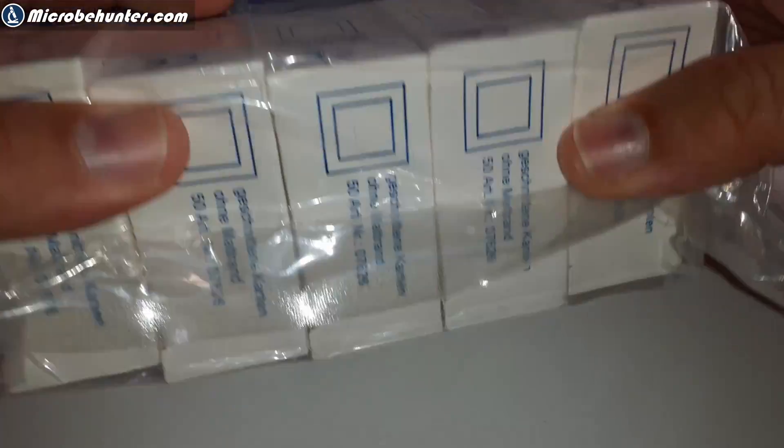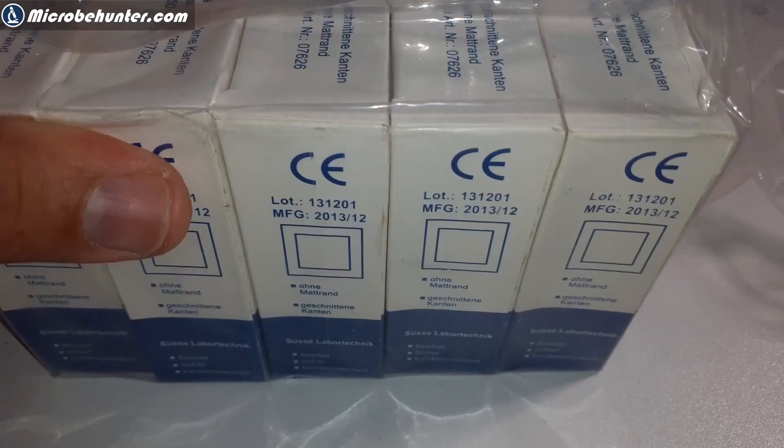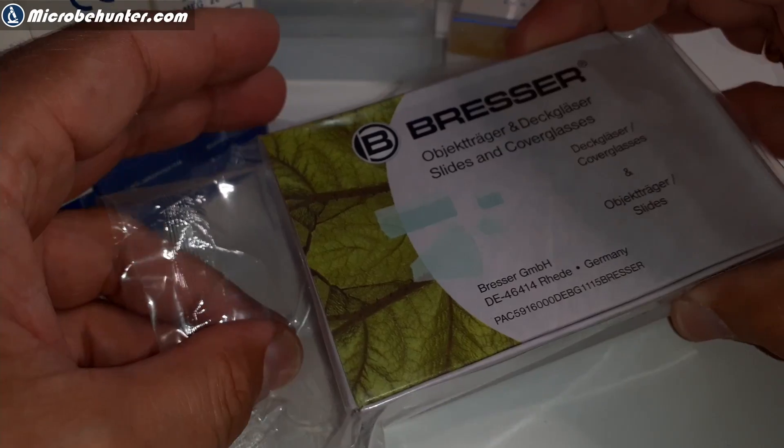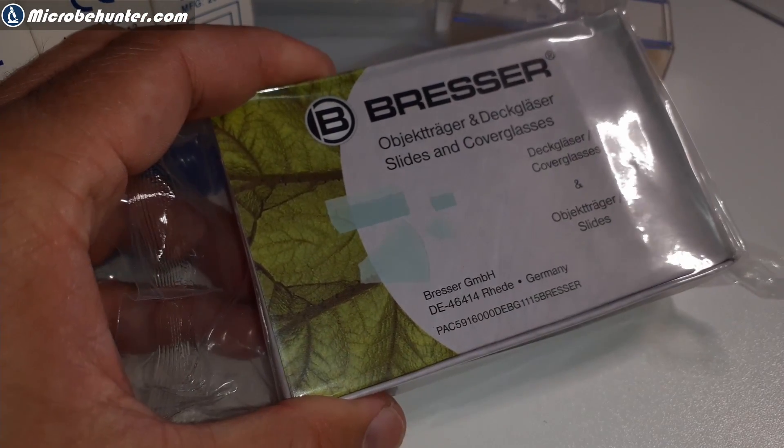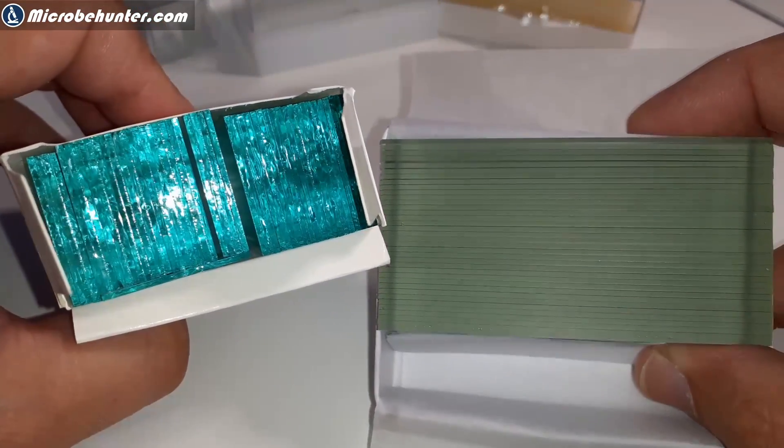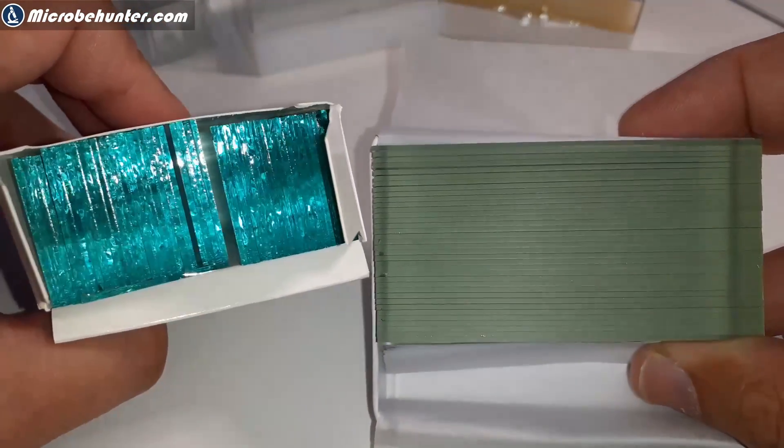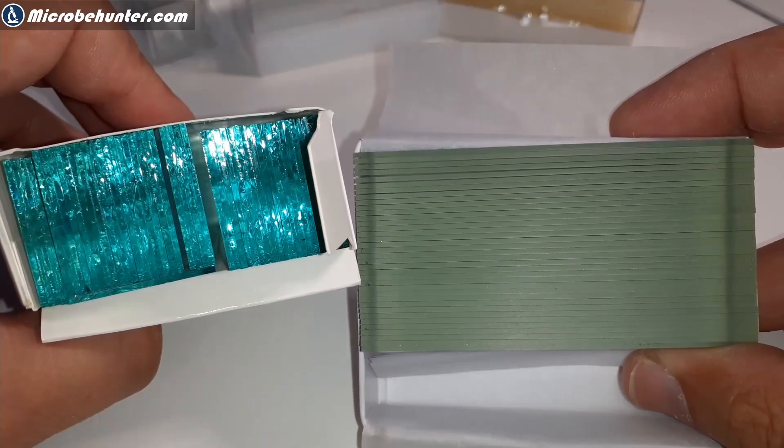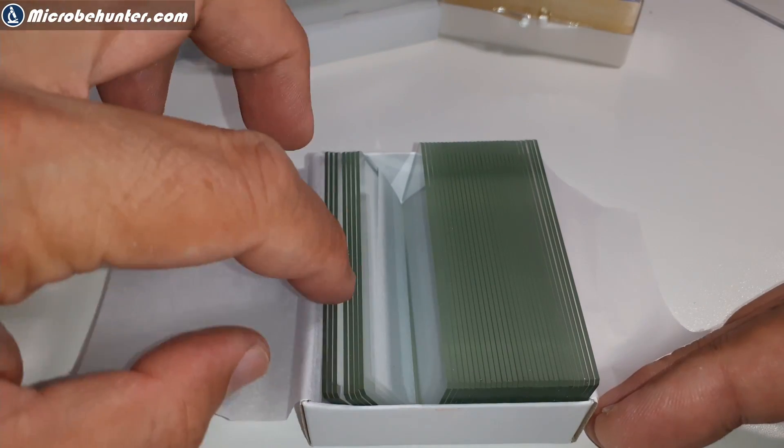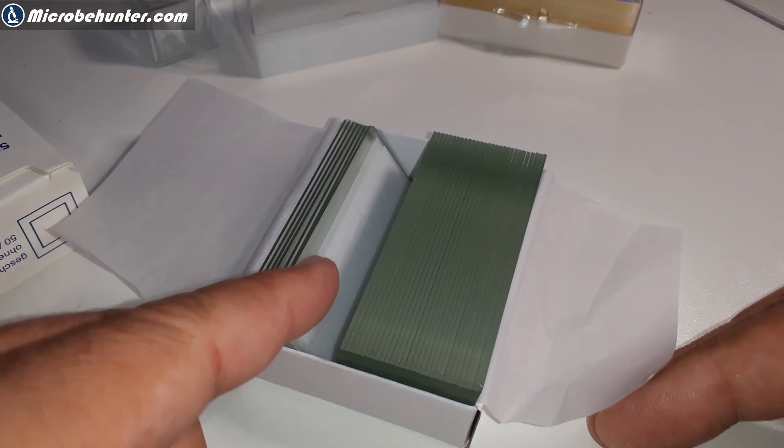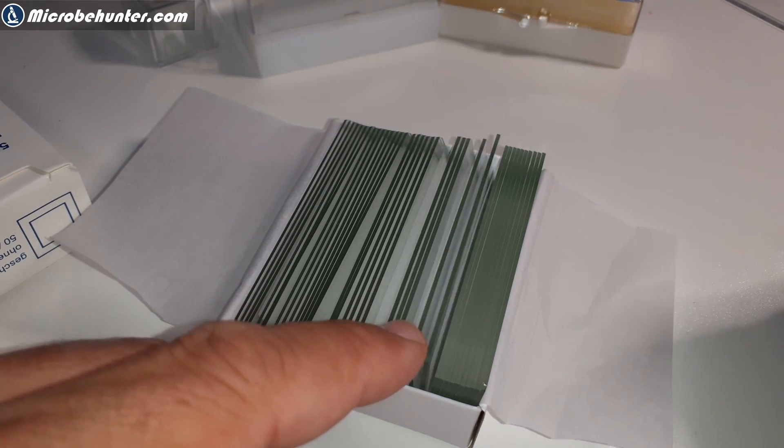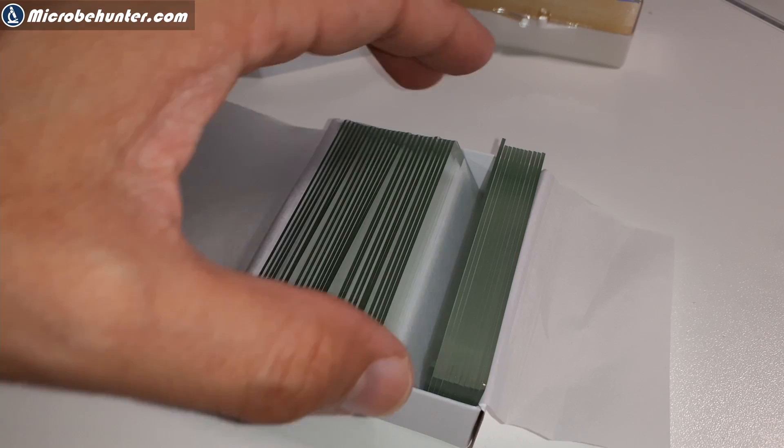I'm going to now open this pack of slides here and also a second pack. Look, here you see both of them. On the left side, you see the cheaper slides with the cut edges, and on the right side, the slightly more expensive slides with 45-degree corners and ground edges. The difference is quite visible. Those slides here are even separated by a piece of paper to prevent them from sticking together. The packaging is a little bit more elaborate here, which also causes the price to be a little bit higher.